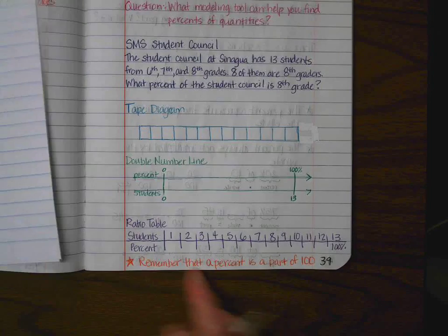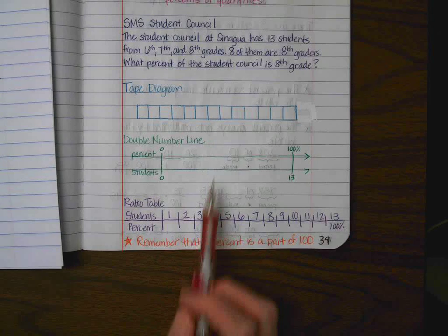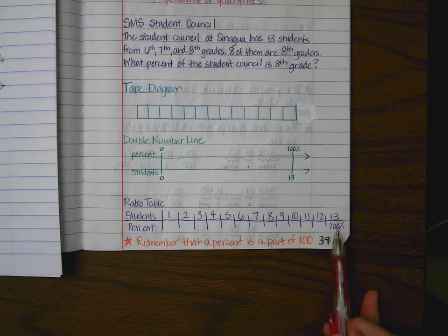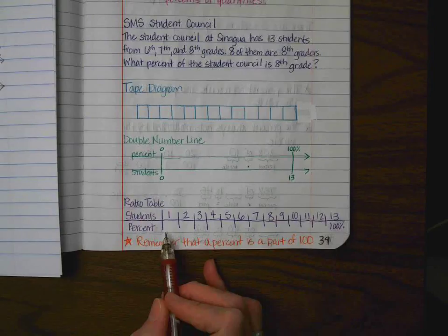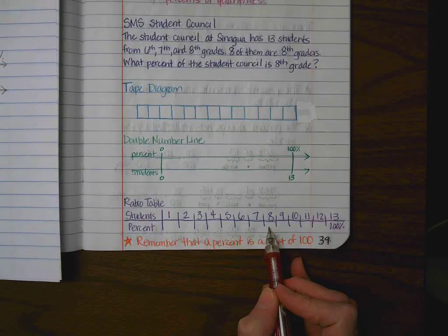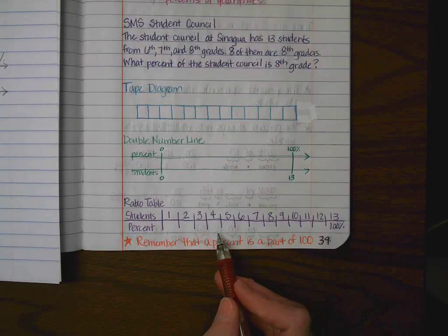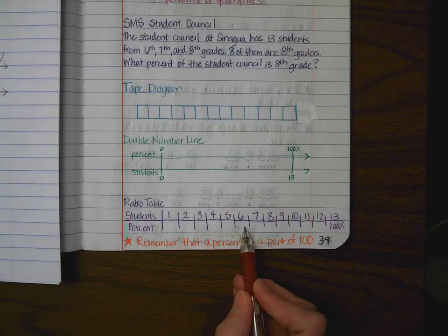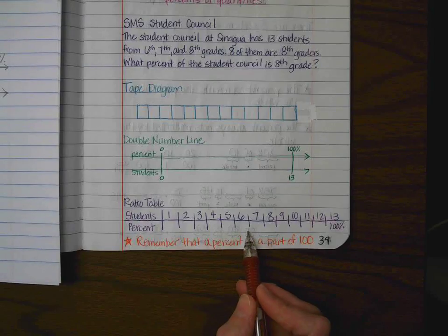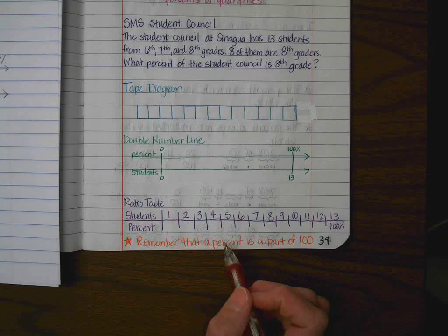Okay? There's one other model that you could do is you could do a ratio table. And again, the ratio table is very similar to what you're seeing up here. So, 13 percent is 100. One percent is seven and nine thirteenths. Eight is 61 and five thirteenths. And you just fill them in as you go. What would half be? Half is about six and a half. So, that would be 50 percent at six and a half.